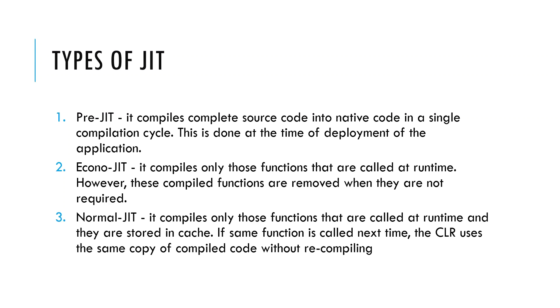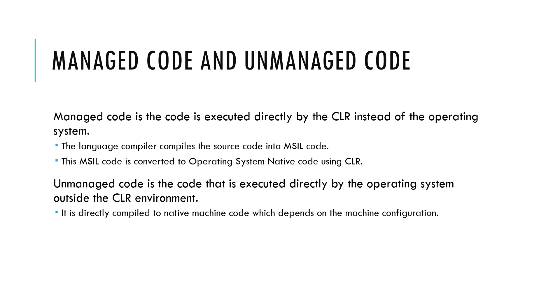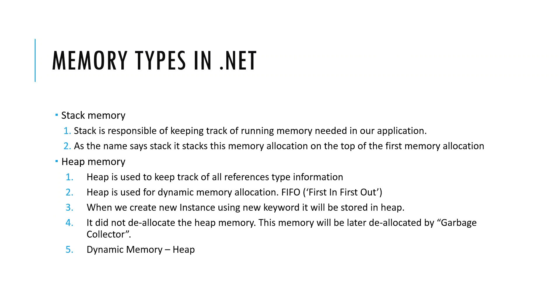What is the difference between managed code and unmanaged code? Managed code is code executed by the CLR instead of the operating system. Unmanaged code is code executed directly by the operating system outside the CLR environment. Regarding memory management in .NET, we have two types: stack memory and heap memory. Stack memory is responsible for keeping track of the running memory needed by our applications. Heap memory is used to keep track of all reference type information and is also used for dynamic memory allocation.